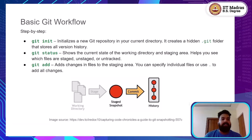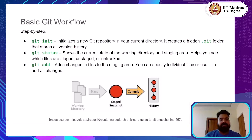Now that we understand what Git and GitHub are, let's go through the basic Git workflow. When you start a new project and want to keep track of it using Git, you begin by initializing a Git repository. This is done with the command git init. Running this command in your project directory creates a hidden .git folder, which is where Git stores all the information about the history of your project — your commits, branches, and other versioning data.